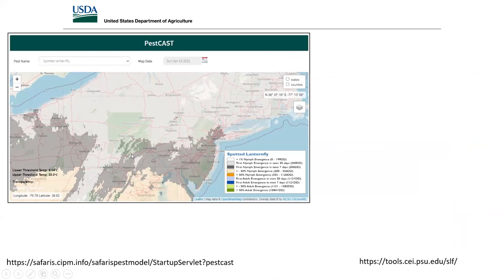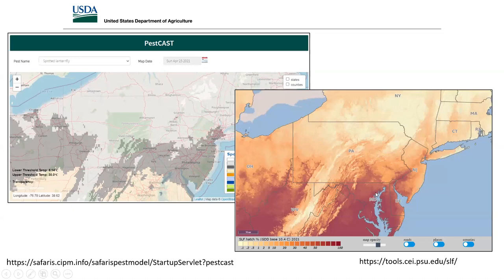Predictive degree-day modeling is being used to forecast hatch timing. A map from the previous Sunday shows the gray area predicting hatch within the next seven days, with higher hatch percentages in areas below. Hatch is already predicted up into Philadelphia, New York, Harrisburg, Pittsburgh, Ohio, and the Winchester area of Virginia. Penn State also has a degree-day model with a slightly different base temperature — both are available online.